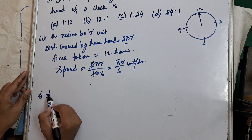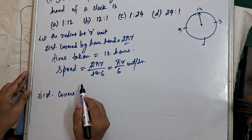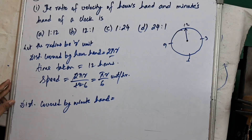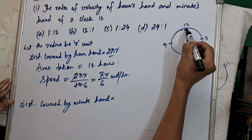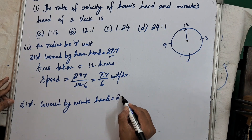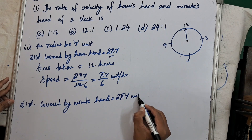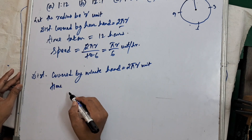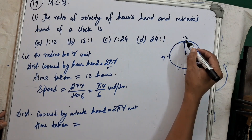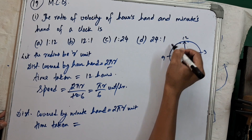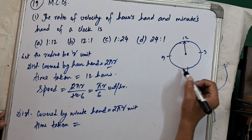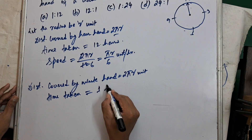Now for the second case — distance covered by the minute hand is also equal to 2πR, because the minute hand also completes one revolution around the circular face. Time taken by the minute hand to complete one revolution is one hour.